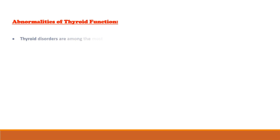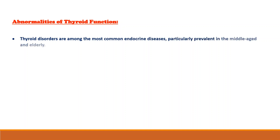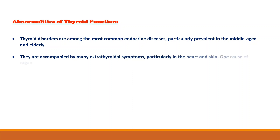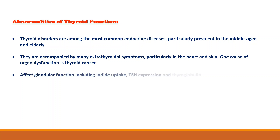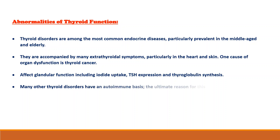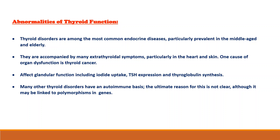Thyroid disorders are among the most common endocrine diseases, particularly prevalent in the middle-aged and elderly. They are accompanied by many extra-thyroidal symptoms, particularly in the heart and skin. One cause of organ dysfunction is thyroid cancer, which also affects glandular function including iodide uptake, TSH expression, and thyroglobulin synthesis. Many other thyroid disorders have an autoimmune basis, although the ultimate reason for this is not clear, and it may be linked to polymorphism in genes.